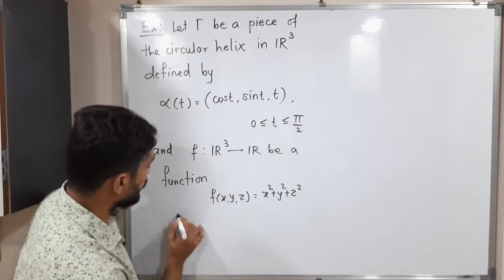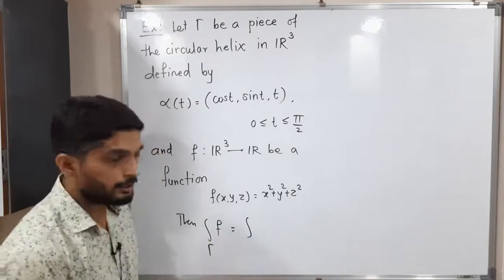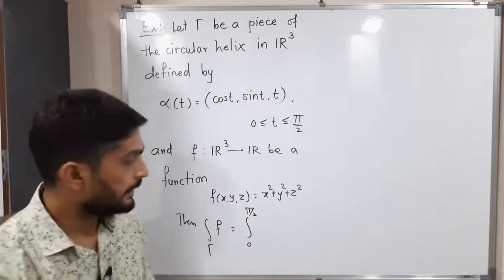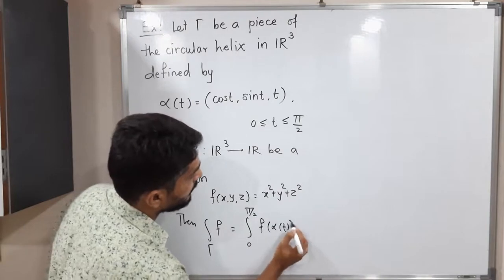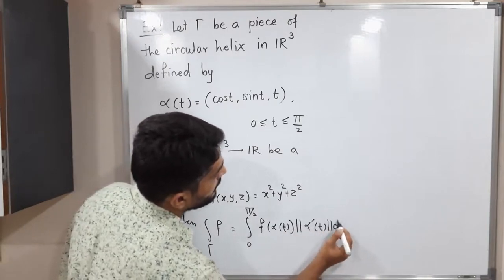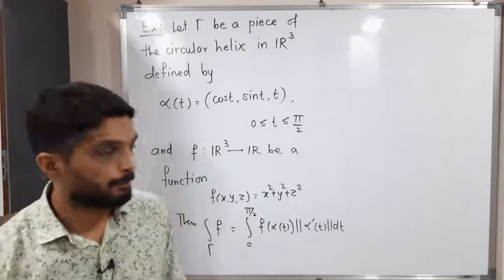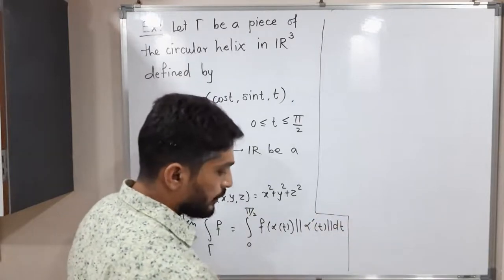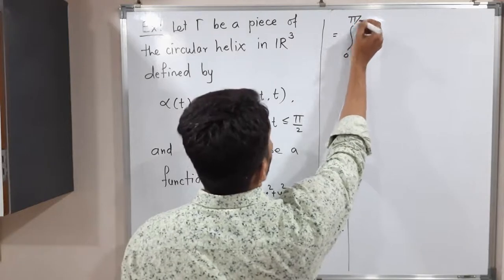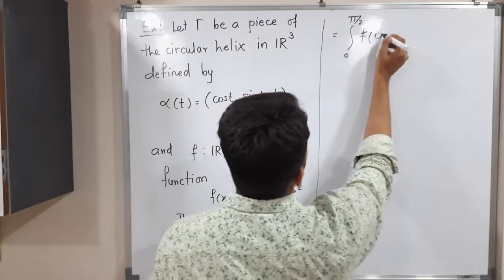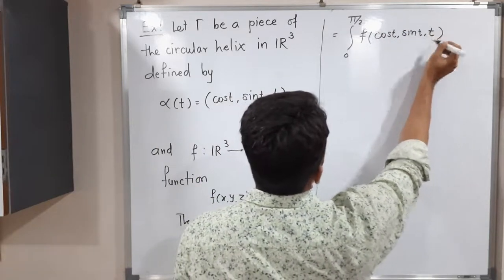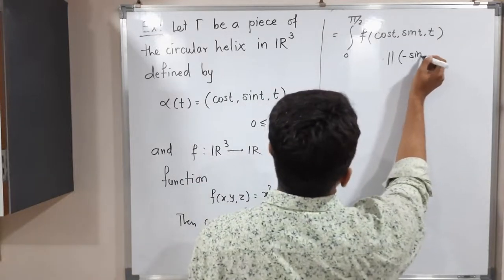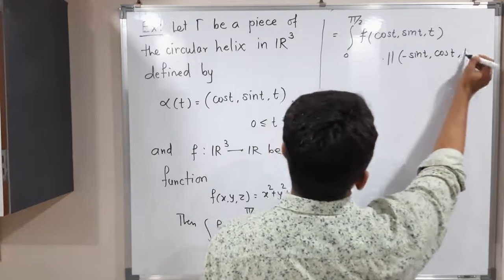Following the definition, the integration of F over gamma equals integration from 0 to pi by 2 — since the parameterization specifies T varies from 0 to pi by 2 — of F(alpha(T)) times the norm of alpha-dash(T) dT. Substituting, we get: F(cos T, sin T, T) times the norm of the derivative. The derivative of alpha gives: (minus sin T, cos T, 1), since the derivative of cos T is minus sin T, derivative of sin T is cos T, and derivative of T is 1.